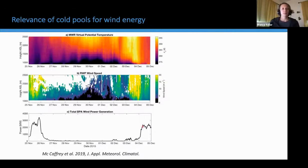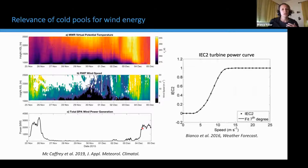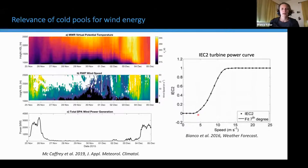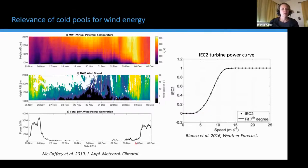When the cold pool decayed, wind power generation rapidly increased. This is because the relationship between wind speed and power generation is not linear, visible here in this turbine power curve. Below the cut-in wind speed of around three meters per second, there is no power generation. In the middle portion of the power curve, wind power increases roughly as the cube of the wind speed, which can lead to large jumps in power generation when wind speed changes only a little. This happens here on the 4th of December, where we see this very rapid increase in wind power generation.